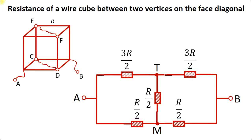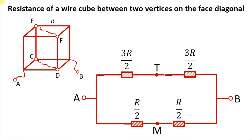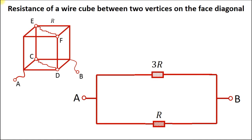Now look at the circuit — this situation is called a balanced bridge. If the ratio of the two resistors in the left leg equals the ratio of the two resistors in the right leg, then points T and M have the same potential and the current through the central resistor is zero. For that reason we can delete this resistor from the circuit. The resistance of the upper part of the circuit is 3R, and the resistance of the bottom part is R. Finally, we calculate the resistance of these two resistors in parallel, giving a result of 3R over 4.